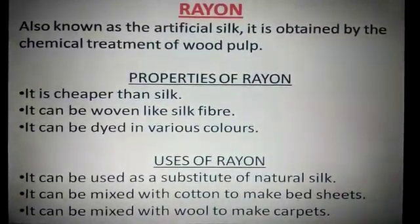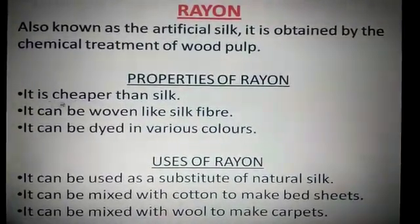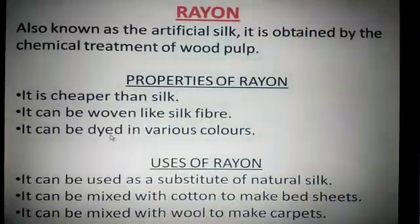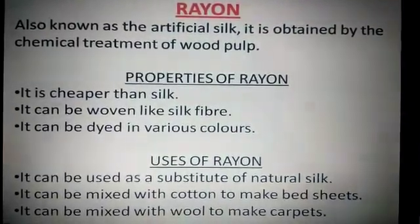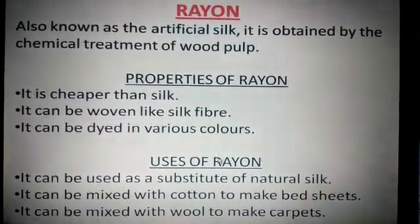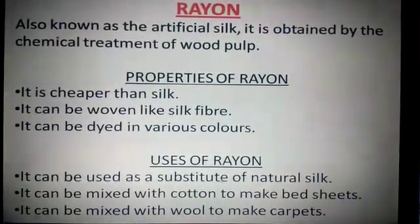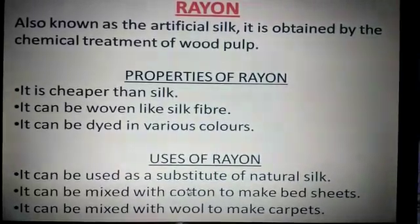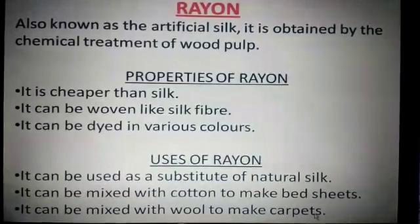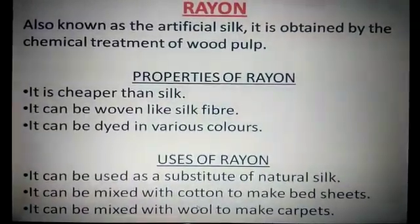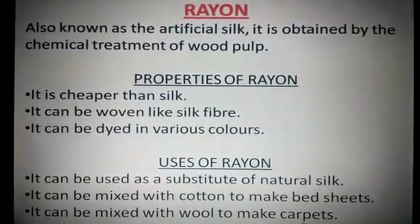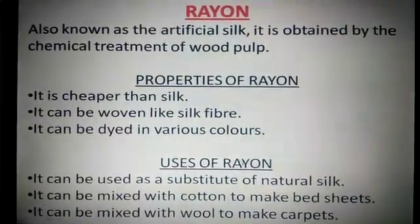Properties of rayon: it exactly looks like silk, so it is cheaper than silk. It can be woven like silk fiber. It can be dyed in various colors. Uses of rayon: it is a substitute of natural silk. It can be easily mixed with natural fiber — that is, cotton — to make bed sheets. It looks like silk but feels like cotton. Rayon can also be easily mixed with wool to make carpets.